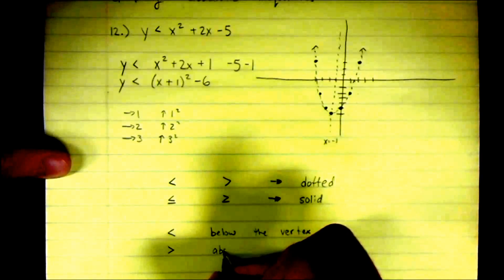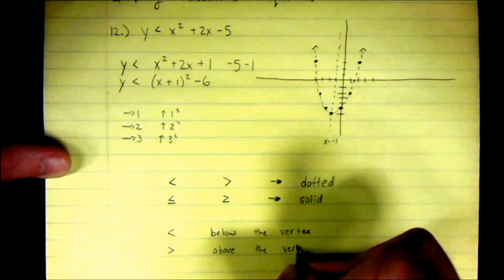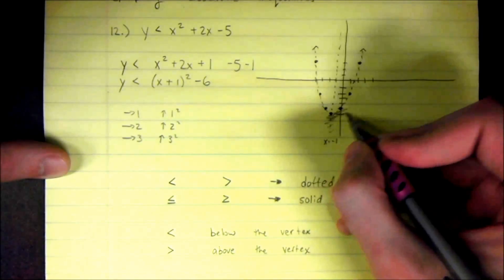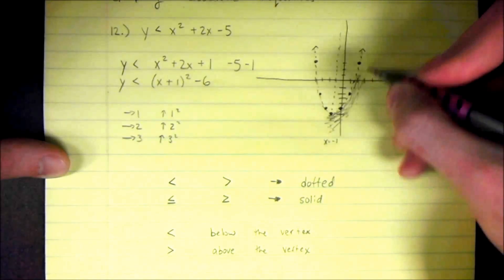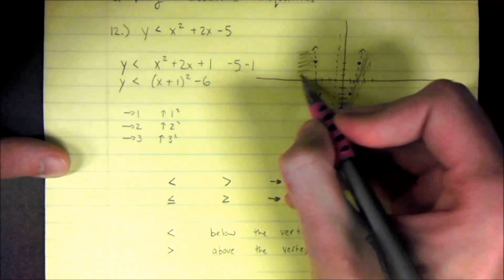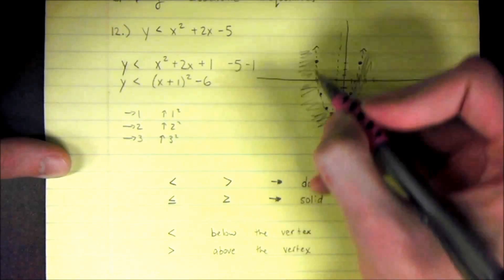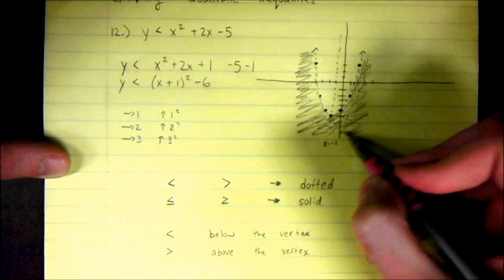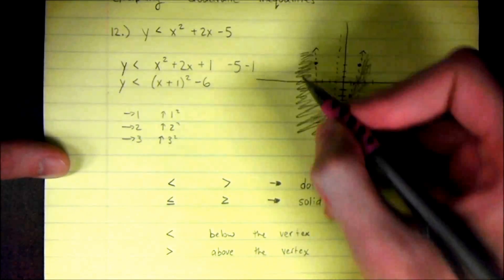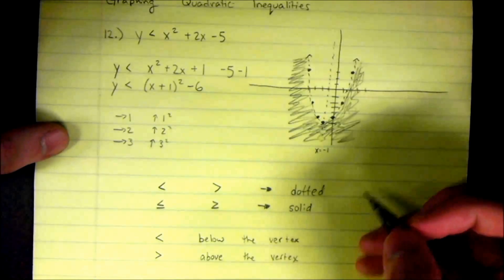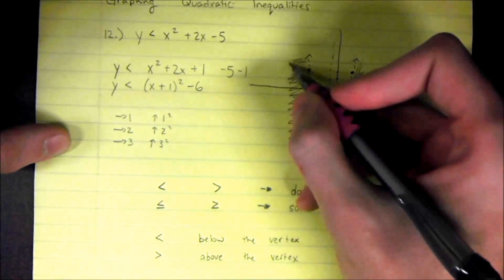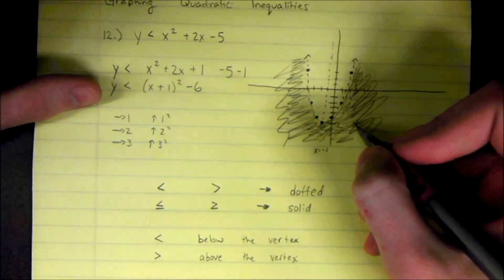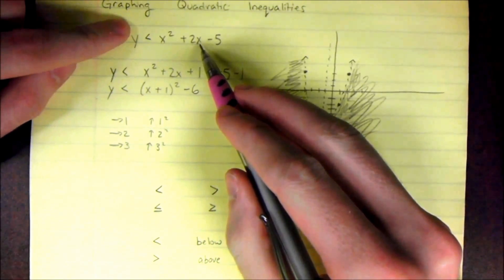The less than tells you where to shade. If it's less than, we're going to shade below the vertex. If it's greater than, you shade above the vertex. So here with less than, we shade below, which in this case is everywhere outside of the quadratic. Everywhere outside of this parabola is the shaded region, or the solution set to the quadratic inequality.